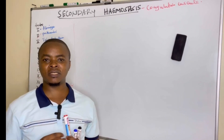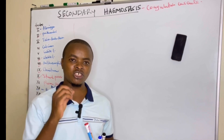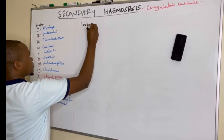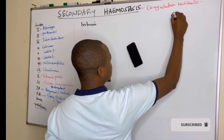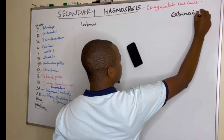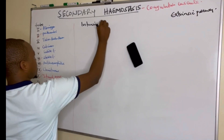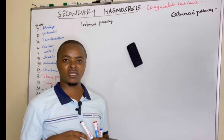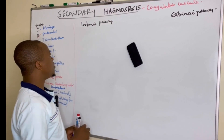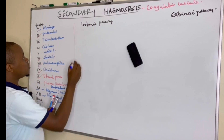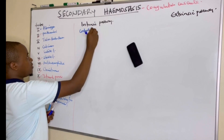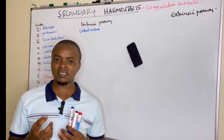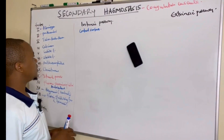Now what we want to talk about is the different pathways under coagulation. Coagulation occurs in two ways: intrinsic and extrinsic. We are going to discuss these two pathways and see where they meet to join the common pathway. For example, the intrinsic pathway is activated by contact surface — meaning the factors that activate it are within the vessels.